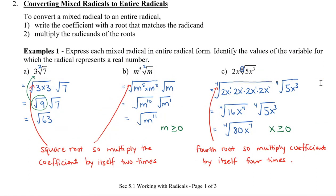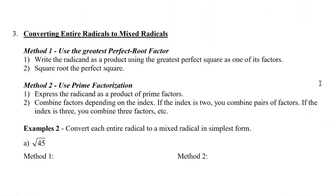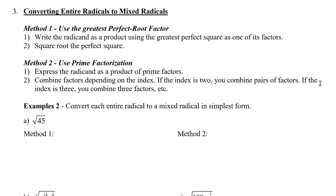Next, I'm going to show you how to convert entire radicals to mixed radicals. There are two methods. The first method is to use the greatest perfect root as a factor, or we can use prime factorization. I'm going to show you both in this first example. We have the square root of 45. We want to find the greatest perfect square that can go into 45, and that number is 9. So we're going to write root 45 as the square root of 9 times 5, rewriting this as the square root of 9 times the square root of 5. The square root of 9 is 3, so we can write this as 3 square root of 5.